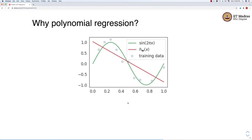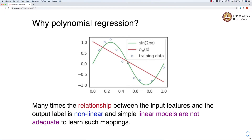Let's take an example where the input feature x1 and output label y are related to each other through the sine function. For such a training set, if we use a line to learn the mapping between the input and output, such a line is going to be very inadequate. You can see visually that there are large errors at each point. In general, there are many times the relationship between the input feature and output label is nonlinear, and a simple linear model is not adequate to learn such mappings.